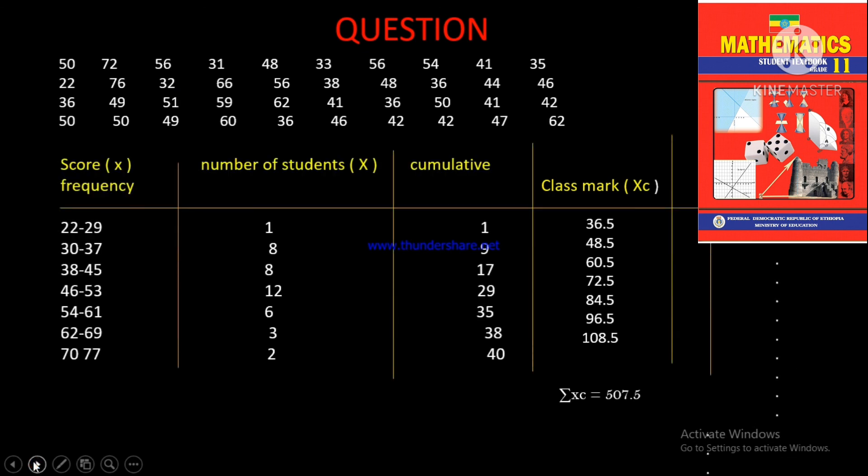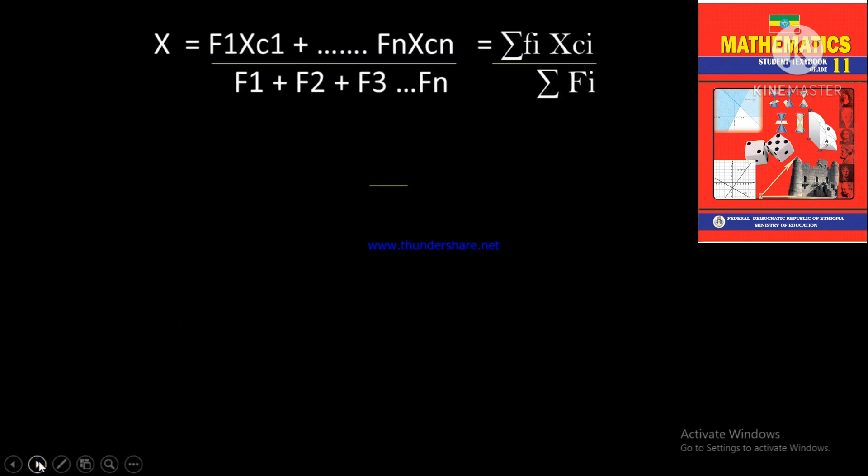So this is f1·xc1 plus f2·xc2 — the formula for the mean of grouped data using class marks and frequencies.